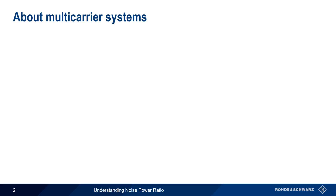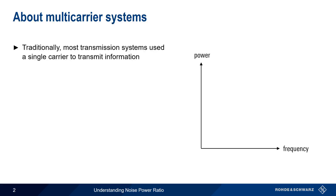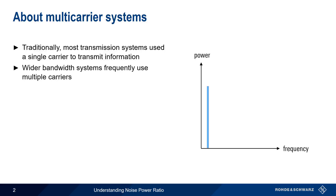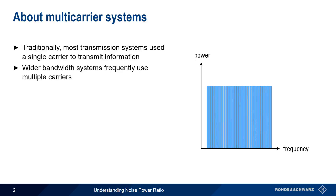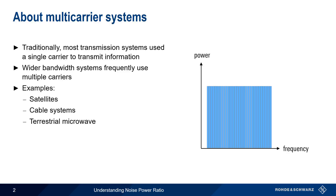Let's start by defining what we mean by a multi-carrier system. Traditionally, most RF transmission systems used a single carrier to transmit information. More recently, wider bandwidth systems now often use some type of multi-carrier transmission scheme. Examples of this include satellite systems, cable television, terrestrial microwave, and other systems.